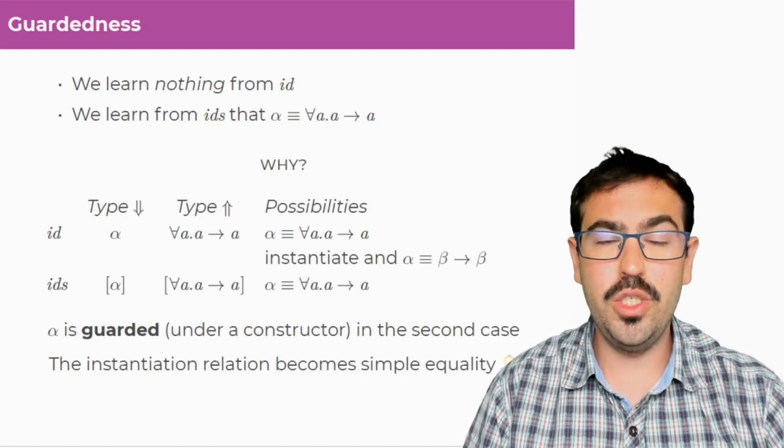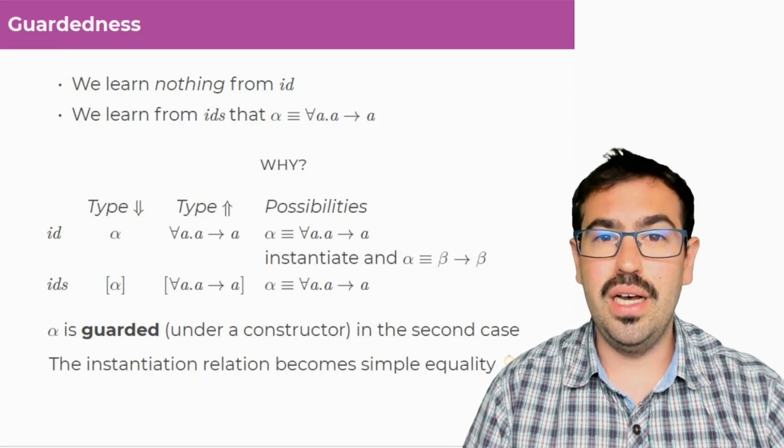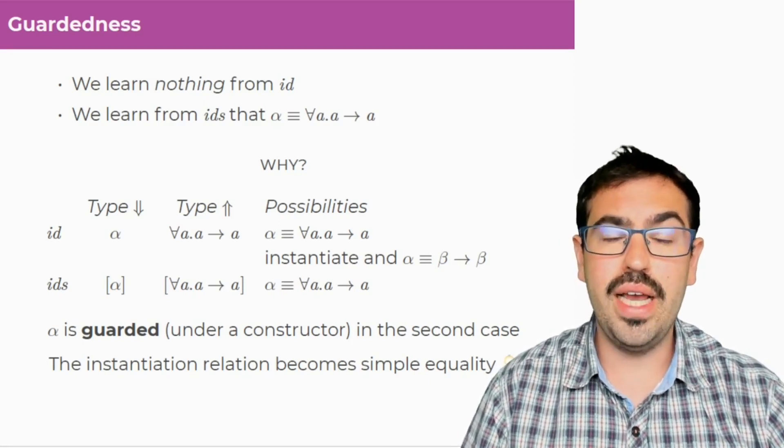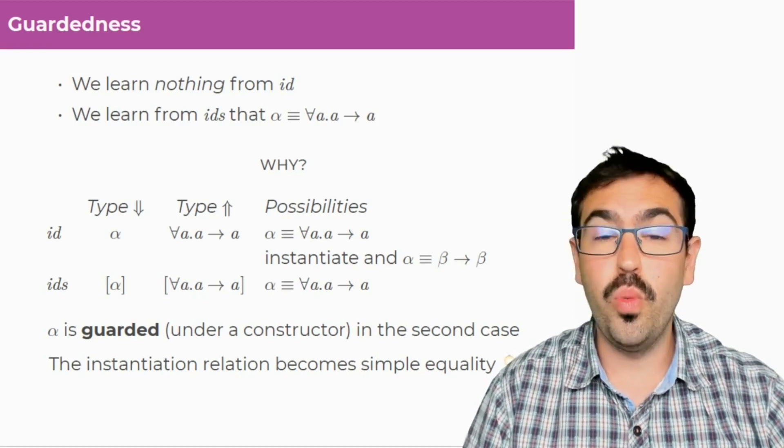And the key idea is that the instantiation relation becomes simple equality when you have a type constructor on top. So in the second case, you have nothing to decide, there is only one choice, so you take it. If you have a single type variable lying around, like in the type of ID, you don't know what to do. So we just say, well, at this point, we learn nothing.